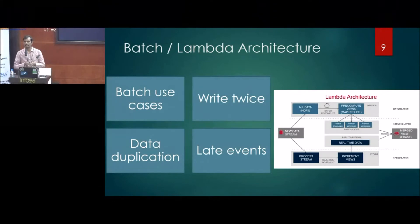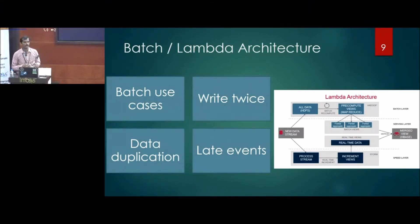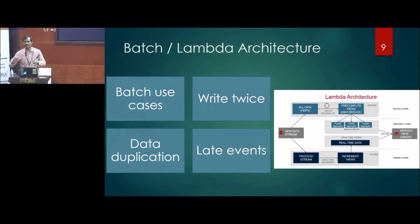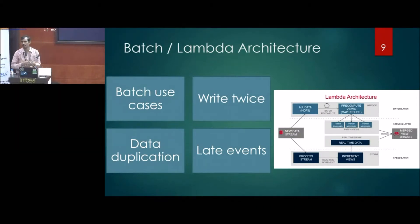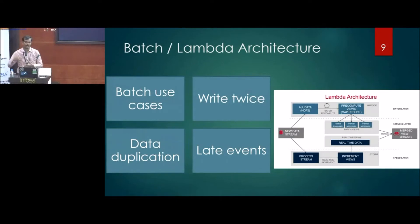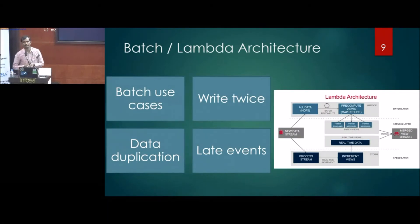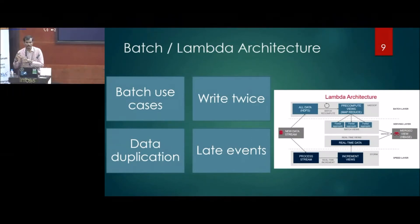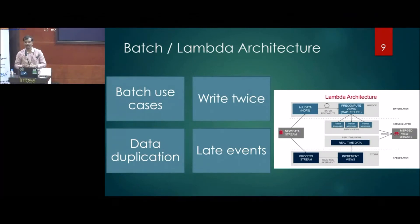In the big data world, streaming analytics was already there but not seamless. Initially there was the Lambda architecture, where the same collected data would be fed to both batch analytics and streaming analytics. Streaming analytics would detect anomalies in real time, batch would periodically update models, and a serving layer would surface results. The challenge was that this required writing code differently for batch versus streaming, sometimes duplicating work, making it not a seamless approach.